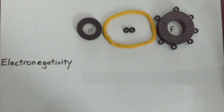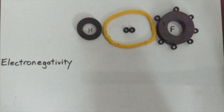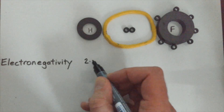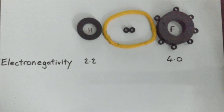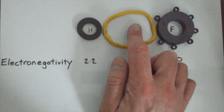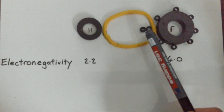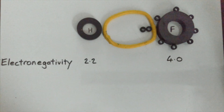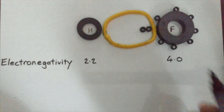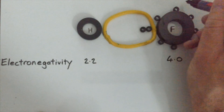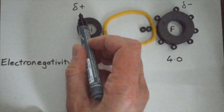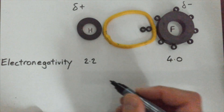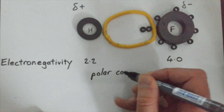What happens if you have two non-metal atoms with different electronegativities? Looking in the data book, hydrogen has an electronegativity of 2.2 and fluorine has an electronegativity of 4.0. Fluorine has the greater attraction for the bonded electrons in this covalent bond. Because there's a greater density of electrons around the fluorine atom, this means there's a negative charge at the fluorine end, leaving a positive charge at the hydrogen end. We have a positive pole and a negative pole, and we refer to this type of covalent bonding as a polar covalent bond.